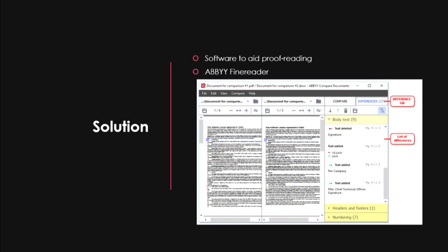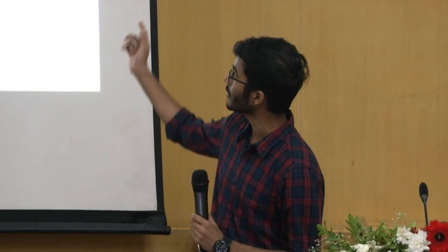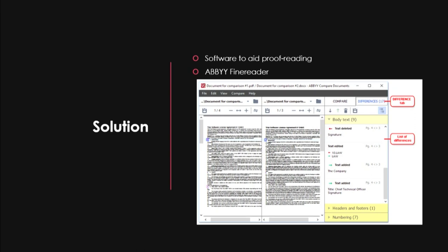We need software to aid this proofreading. We tried to find many options and could only find one: ABBYY FineReader, which is proprietary. This software takes two PDFs — one in image form and one as a converted selectable PDF — displays them side by side, and after using the compare function generates an error log that highlights errors one by one, grabbing the user's attention to each particular error.